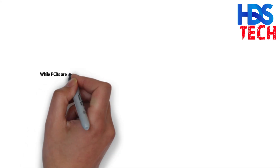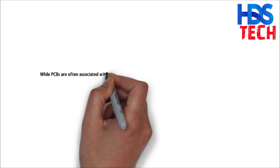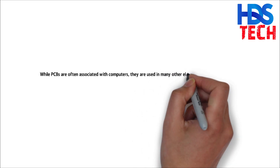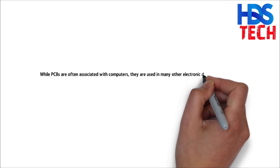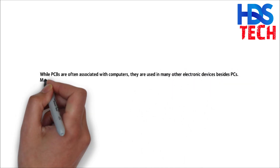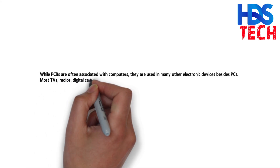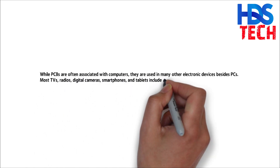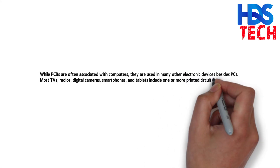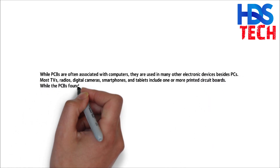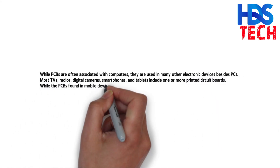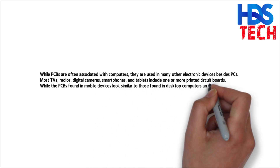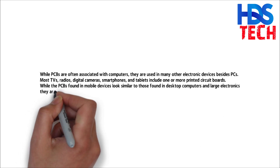While PCBs are often associated with computers, they are used in many other electronic devices besides PCs. Most TVs, radios, digital cameras, smartphones, and tablets include one or more printed circuit boards. PCBs found in mobile devices look similar to those found in desktop computers and large electronics, but they are typically thinner and contain finer circuitry.